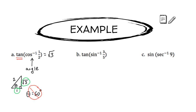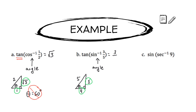In the next example, sine inverse of 3/5 requests an angle — we don't need to find it explicitly. We draw a triangle: sine is 3/5, so opposite is 3 and hypotenuse is 5. Using the Pythagorean theorem, the adjacent side is 4. We want tangent of the angle, which is opposite over adjacent, so the answer is 3/4.